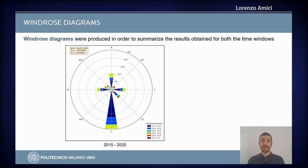Since we obtain a displacement direction and a displacement magnitude map for each couple of images in our stack, we needed a way to summarize the results clearly. For this task we chose wind diagrams, so that in a single graph we could have information about the direction of the movements, the quantity of pixels moving in each direction, and the magnitudes of these movements.